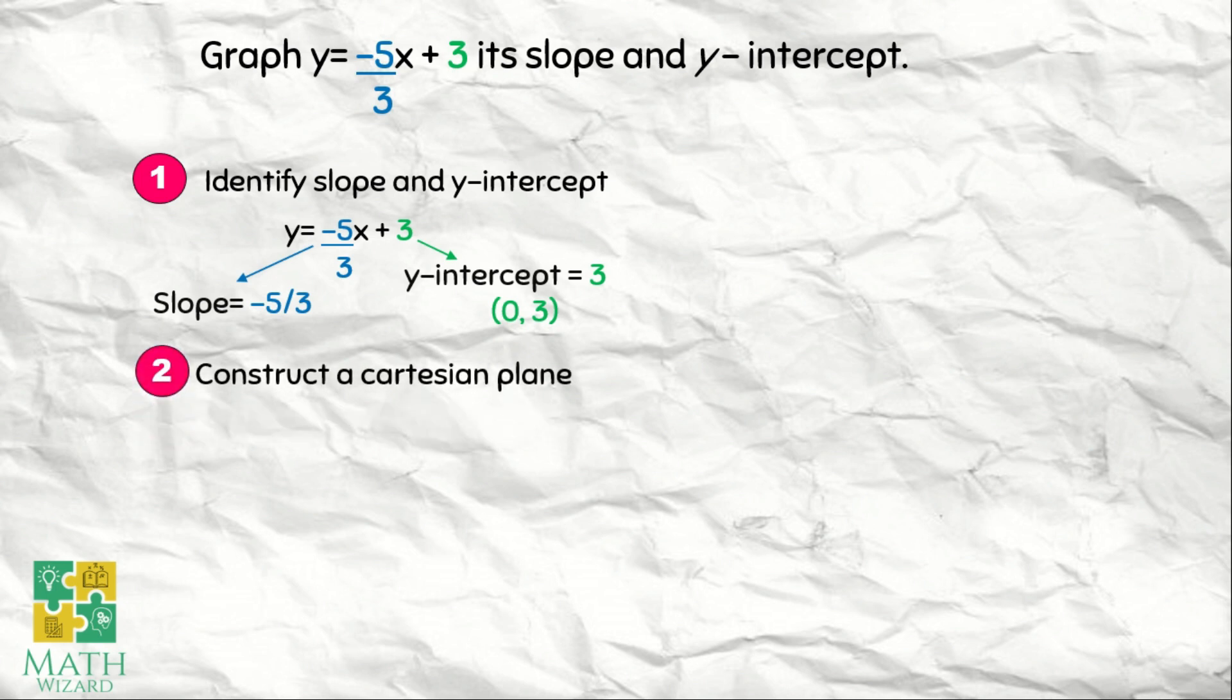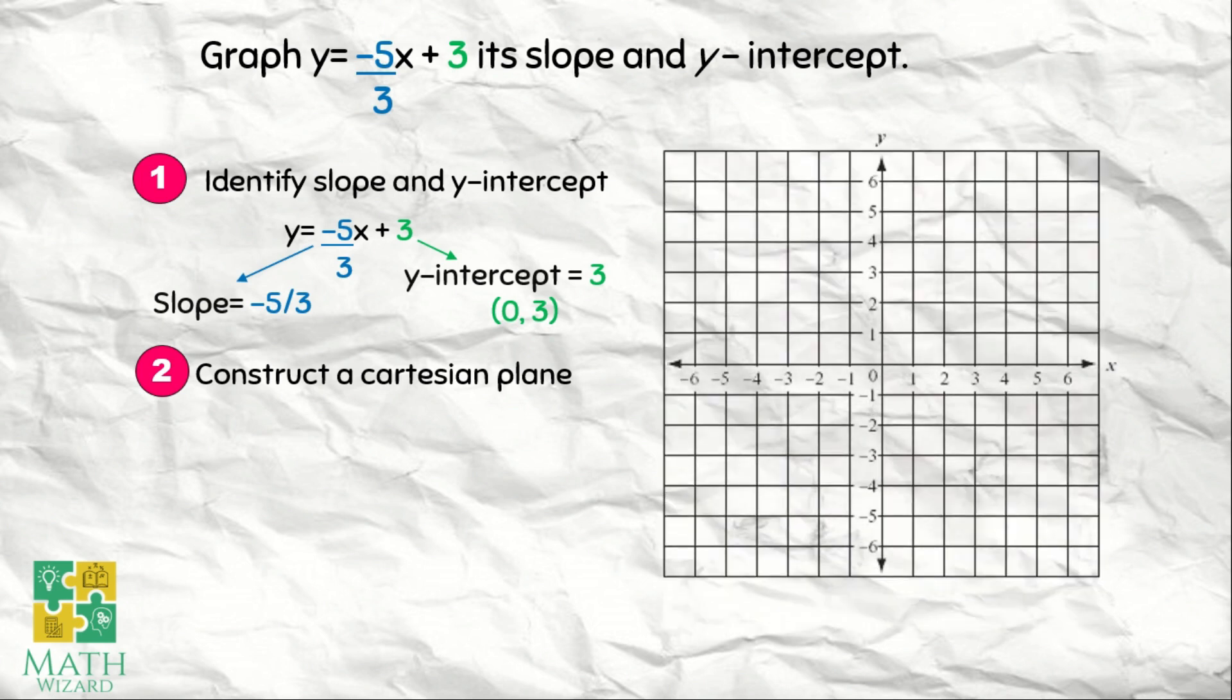The second step is we need to construct a Cartesian plane. We have our Cartesian plane. The third step, ipa-plot natin yung point na 0 and 3. Yung x natin ay 0 at y natin ay positive 3. So we have this point.